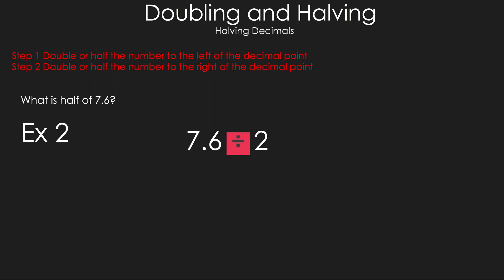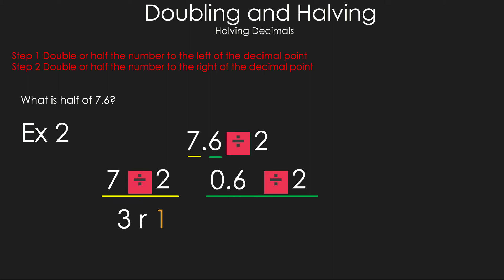Example 2: half of 7.6. Separate them and take half of 7 — this time we have a remainder, giving 3 remainder 1. We add that remainder to the 6 tenths to get 1.6, then divide by 2 to get 8 tenths. Combining gives 3.8 as the answer.